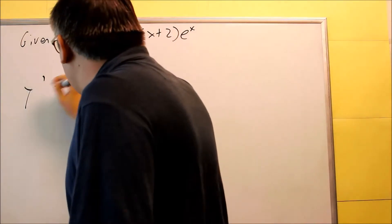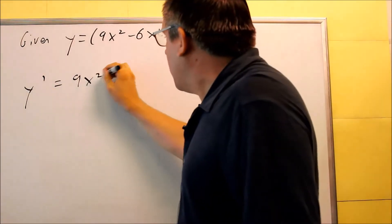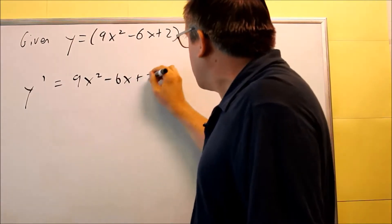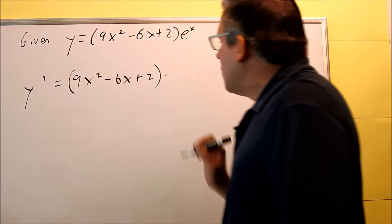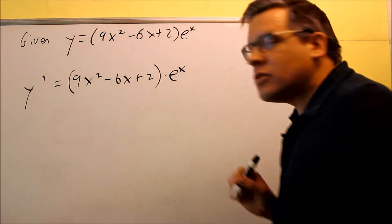So let's apply the product rule. So product rule, we got the first thing, 9x squared minus 6x plus 2, we have all of that, times the derivative of the second, derivative of e to the x, again is e to the x,